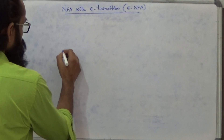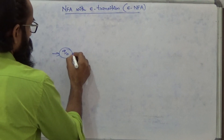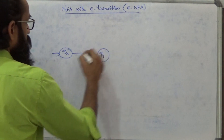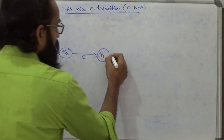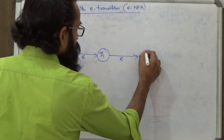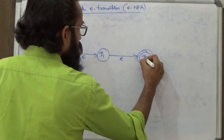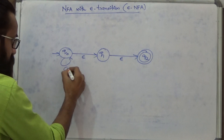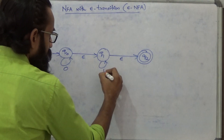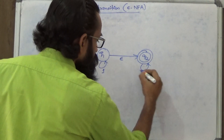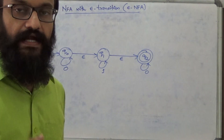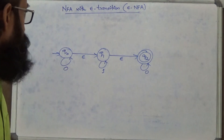Let us consider an example. From Q0, without consuming anything, it goes to state Q1. This is what we mean by epsilon transition. From Q1, without consuming anything, assume it is going to state Q2. Let the transitions be 0, 1, 0. Can you recognize or identify the language recognized by this machine?